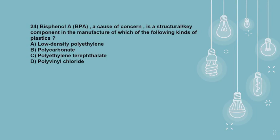Question 24: Bisphenol A (BPA), a cause of concern, is a structural/key component in the manufacture of which of the following kinds of plastics? The correct option is Option B: polycarbonate. Bisphenol A is a chemical used to make polycarbonate plastic, which is used to make hard plastic items such as baby bottles, reusable water bottles, food containers, pitchers, tableware, and other storage containers.